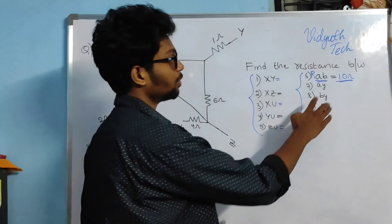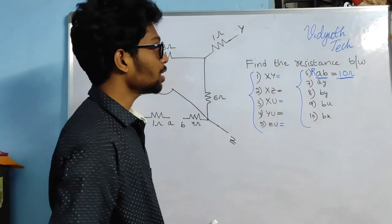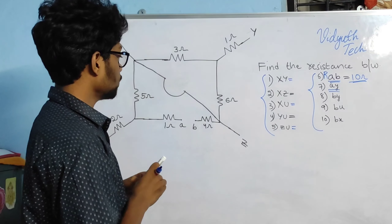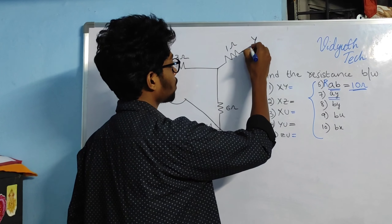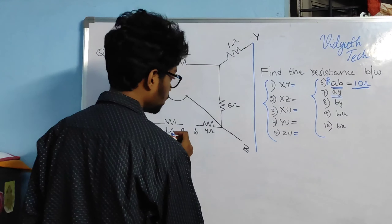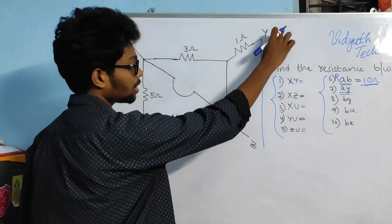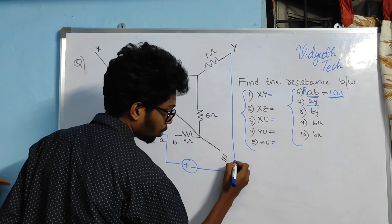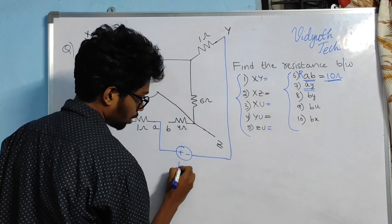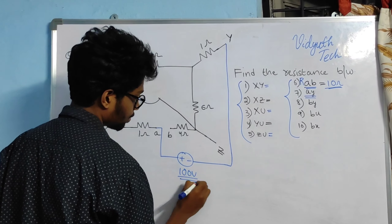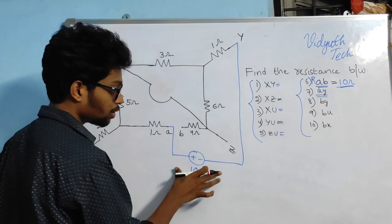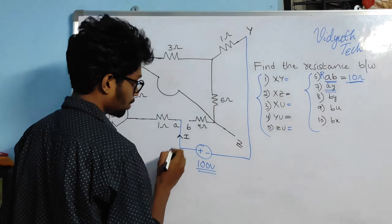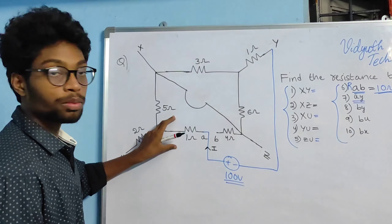Equivalent resistance between A and B terminals is completed. Now I am going to find equivalent resistance between A and Y terminals. To avoid confusion, I am taking a voltage source between A and Y terminals, with A as more positive, taking 100 volts. Current always flows from positive to negative, so current I flows. After this, through 1 ohm resistance.